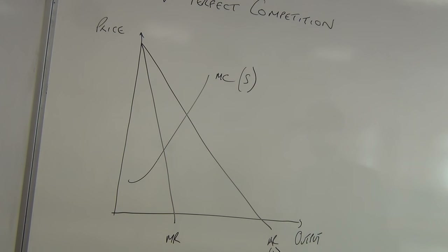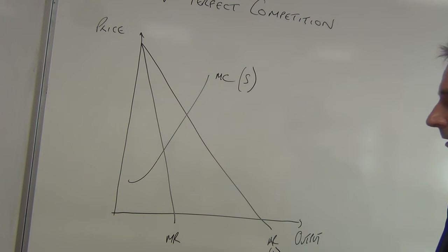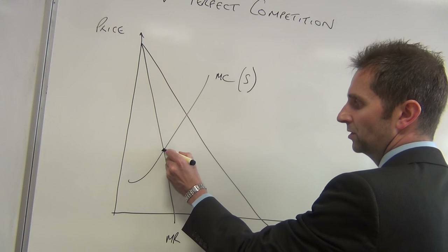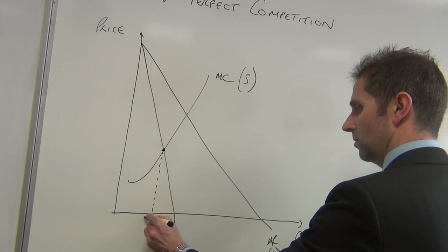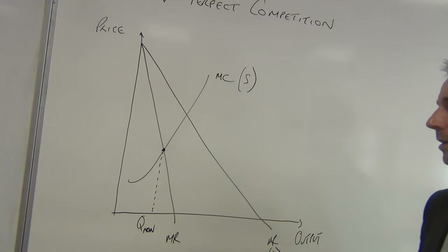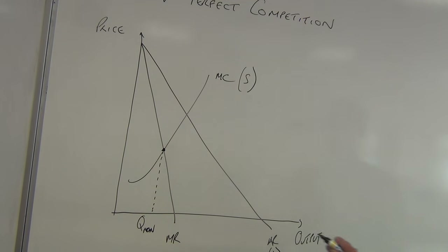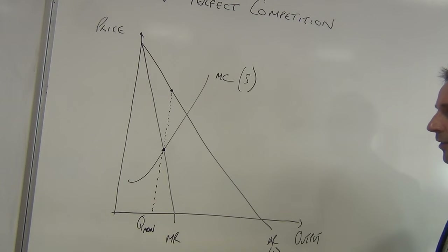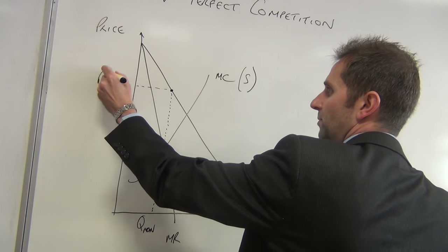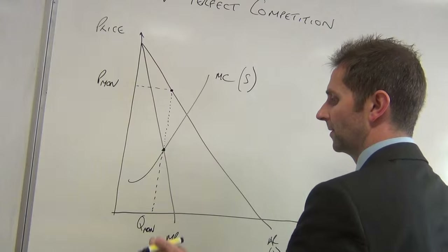Let's put our price and output points on for monopoly to begin with. The monopolist maximises profit where MC equals MR, so we look for that intersection, and from there we take a line down to the x-axis to get the monopolist's output — I'll call that Q-mon. Don't make the mistake of taking the dashed line across to the y-axis and assuming that's your price point for the monopolist, because the price point always comes from the average revenue curve. So we take the dashed line at Q-mon up to the demand curve and then across to the y-axis — that is the monopoly price.